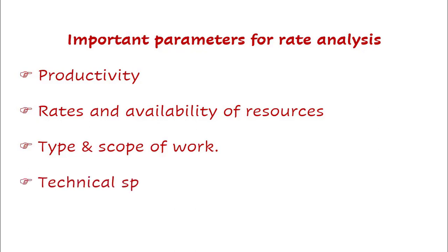The fourth parameter is technical specifications. Each work has its own specifications, which may follow Indian Standards such as IS, BIS, IRC, MORTH, ASTM, NVC, or CPWD — depending on the contract. For example, the minimum cement content of M20 grade concrete is 300 kg per cubic meter under mild exposure as per IS 456 code.